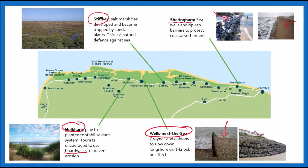Unfortunately, as you can quite clearly see from this image, groins will starve the next beach of sediment, so you're going to have higher levels of erosion there than here — so you're sacrificing one for the other, and people living in that area might not be happy with this. Gabions are essentially steel wire cages filled with rocks, and that's again supposed to absorb the energy. They are highly effective but unfortunately they just don't look very good in the area and don't mesh well with the natural landscape.